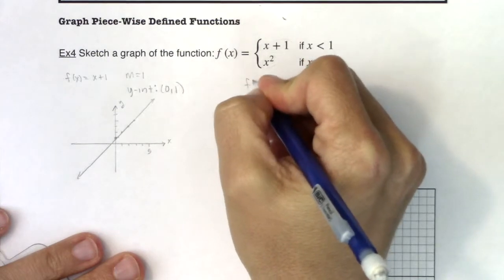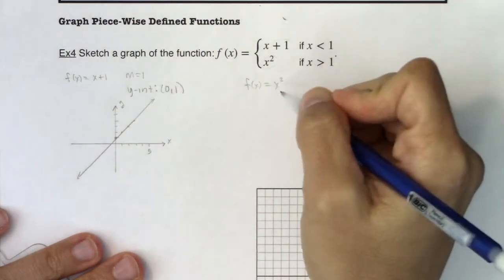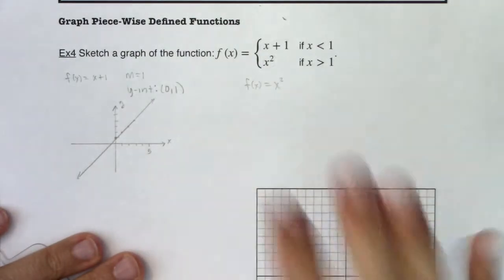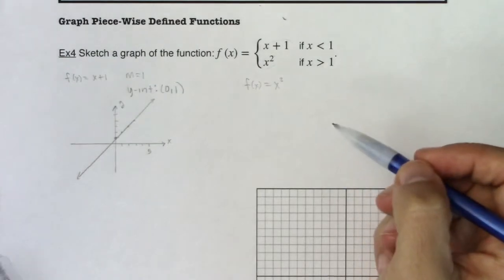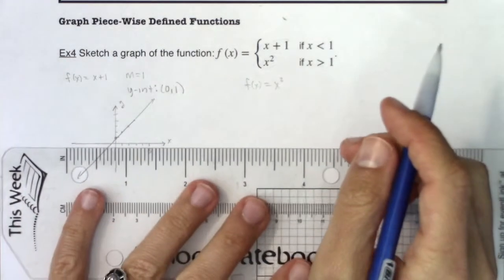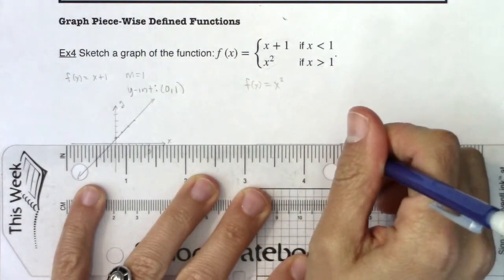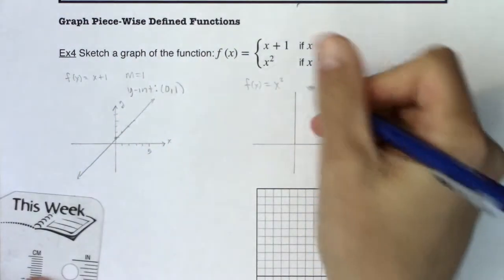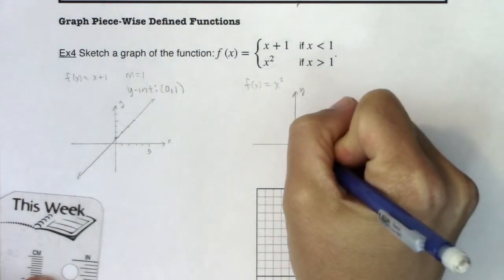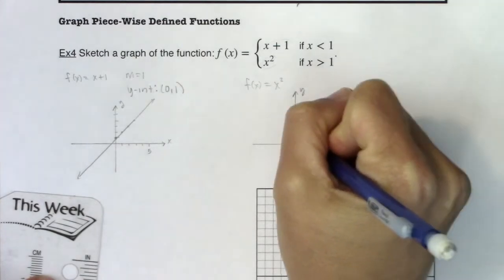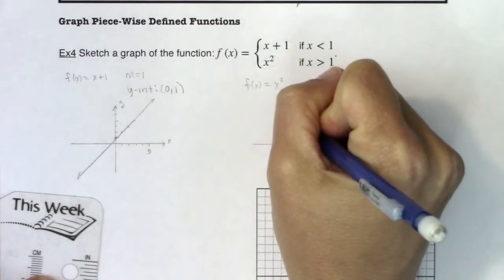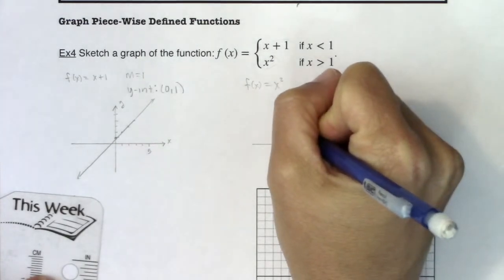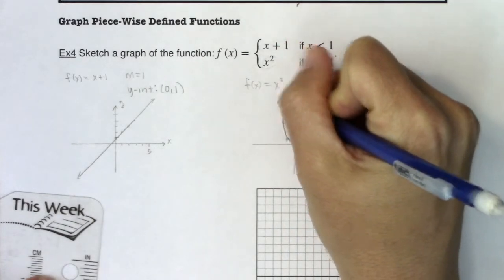Let me try the other function in this piecewise function — x squared. This is a parabola, one of your toolkit functions. Hopefully when you see its equation, you immediately know we've got an upward-facing parabola. This starts at the origin; I've got 1, 1 and negative 1, 1, then 2, 4 and negative 2, 4 because of symmetry. It looks something like this.